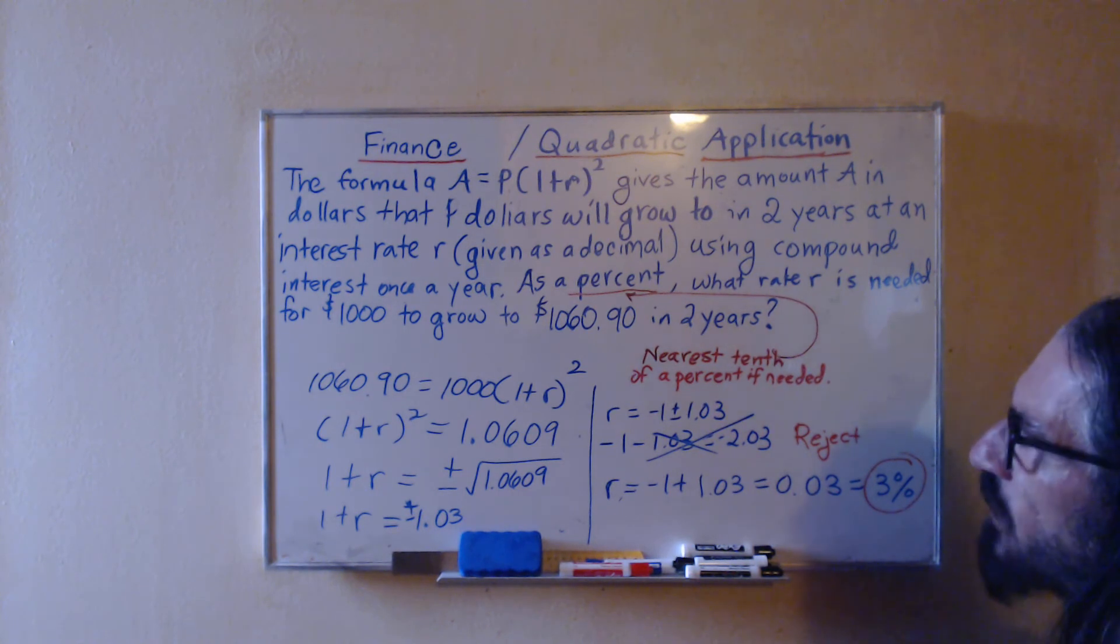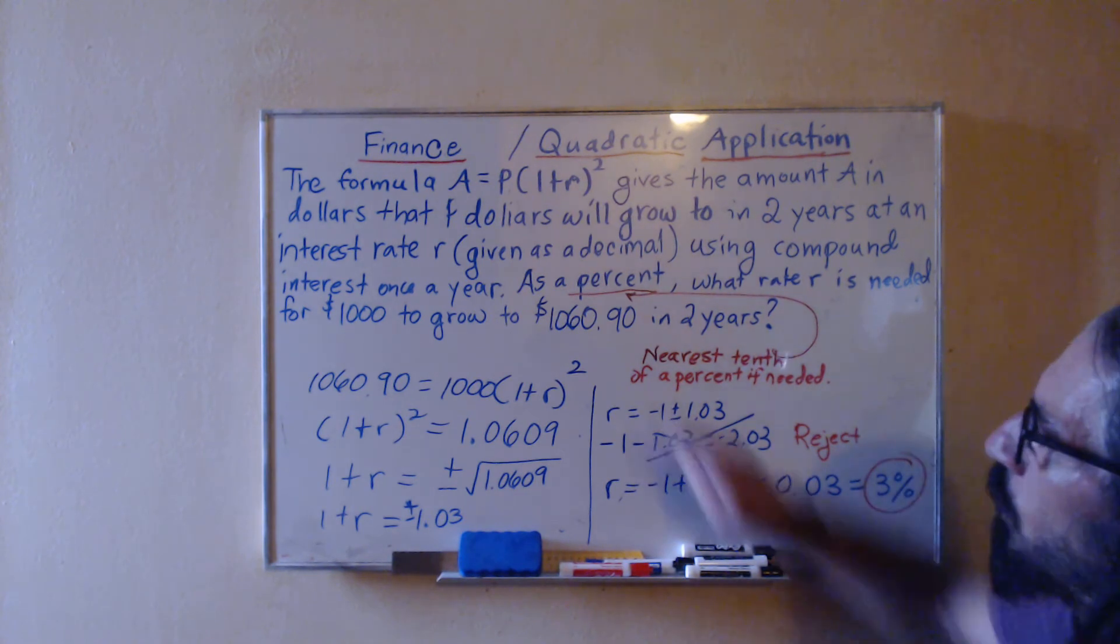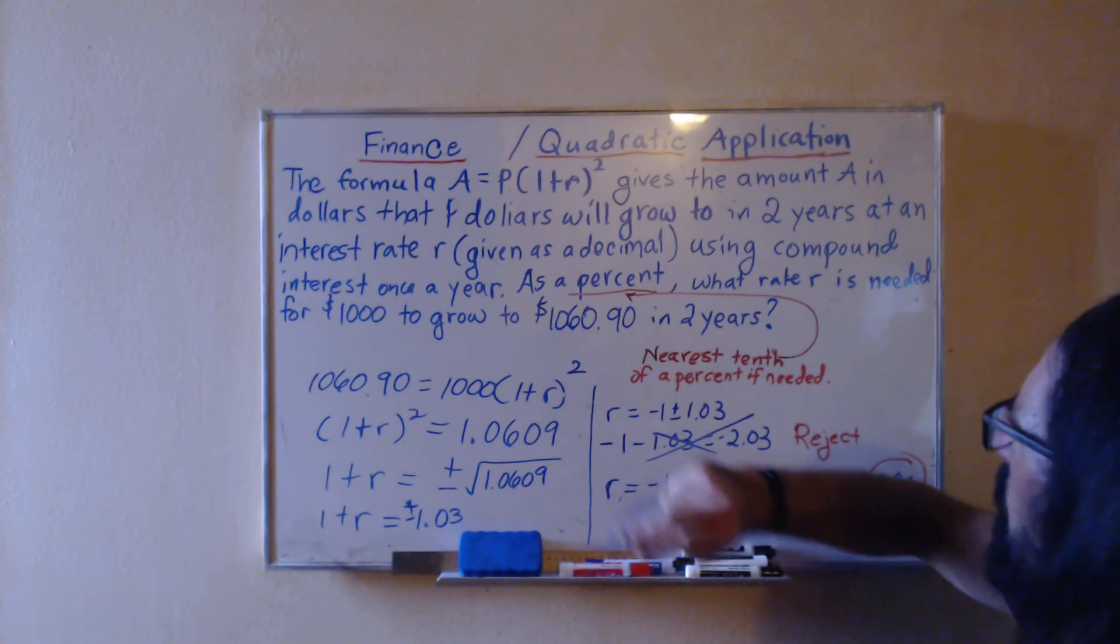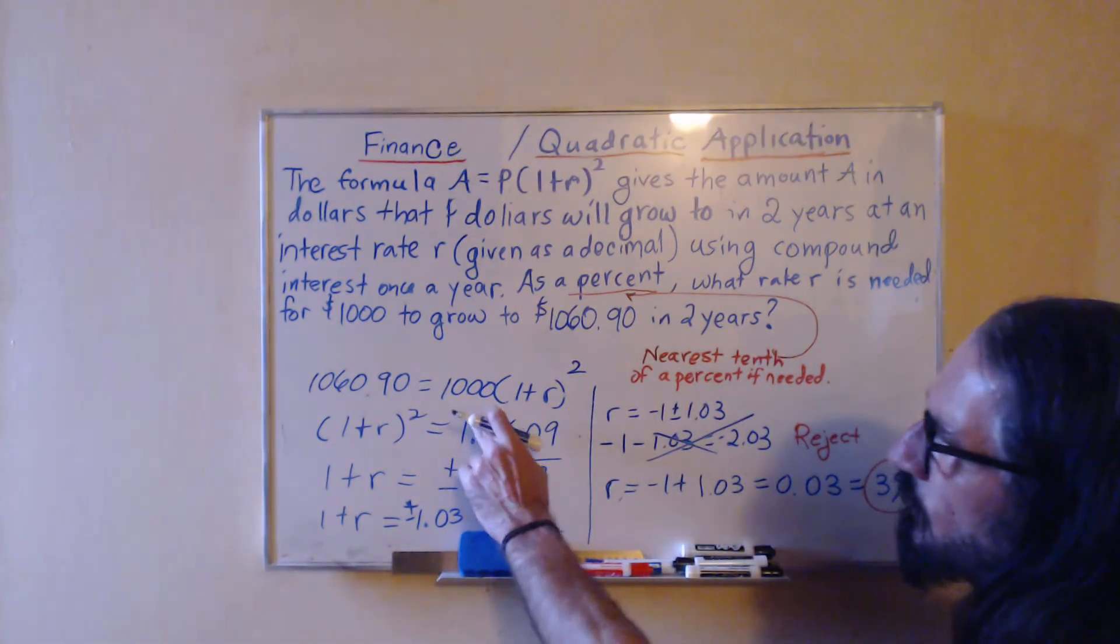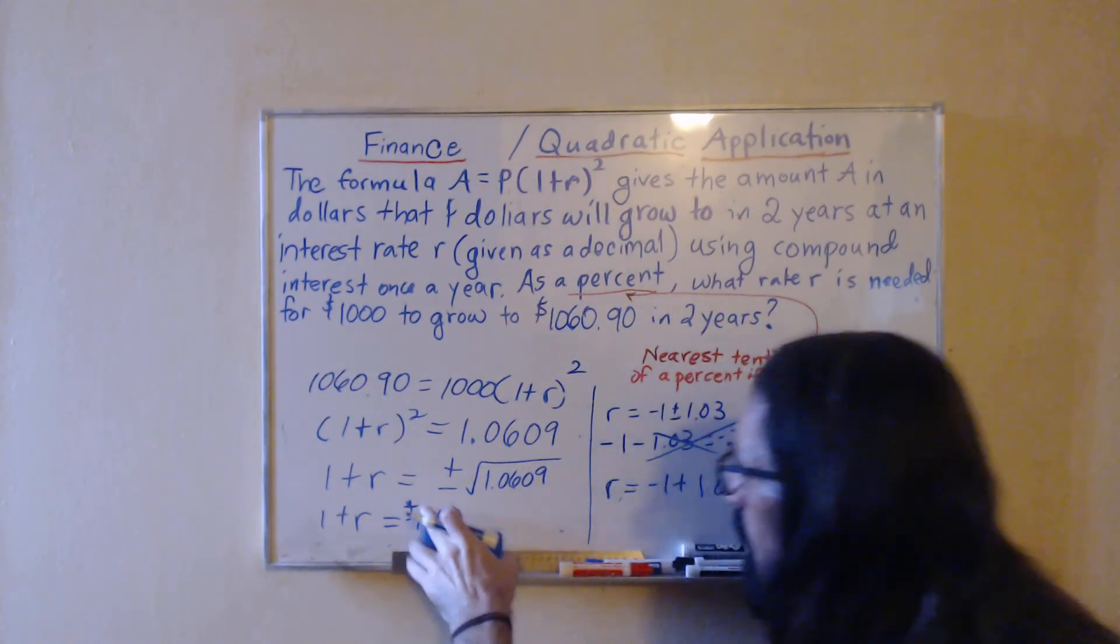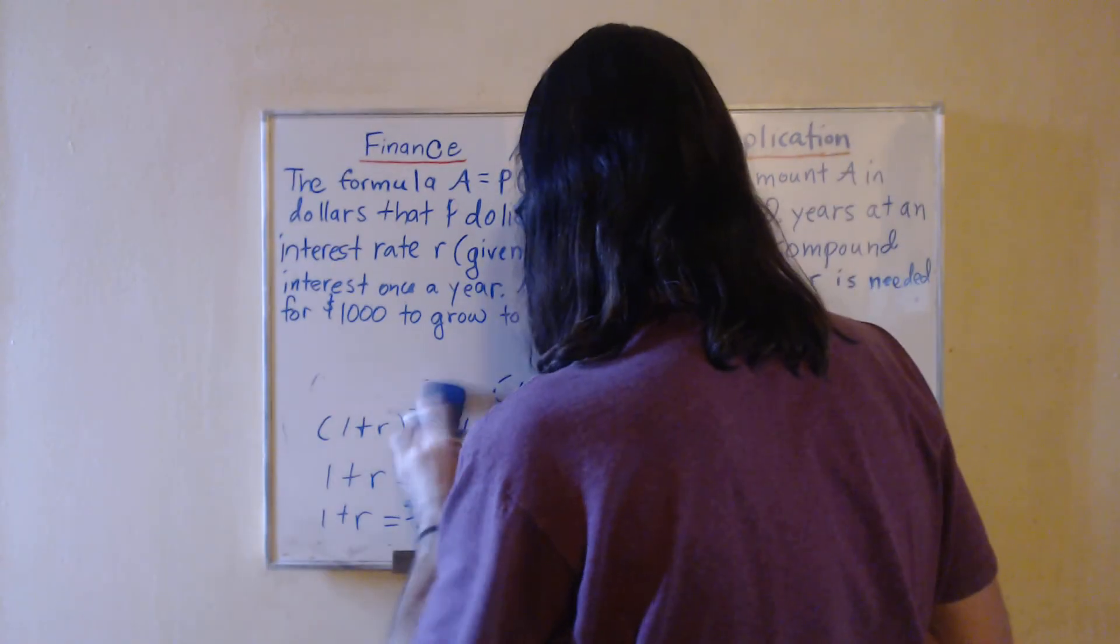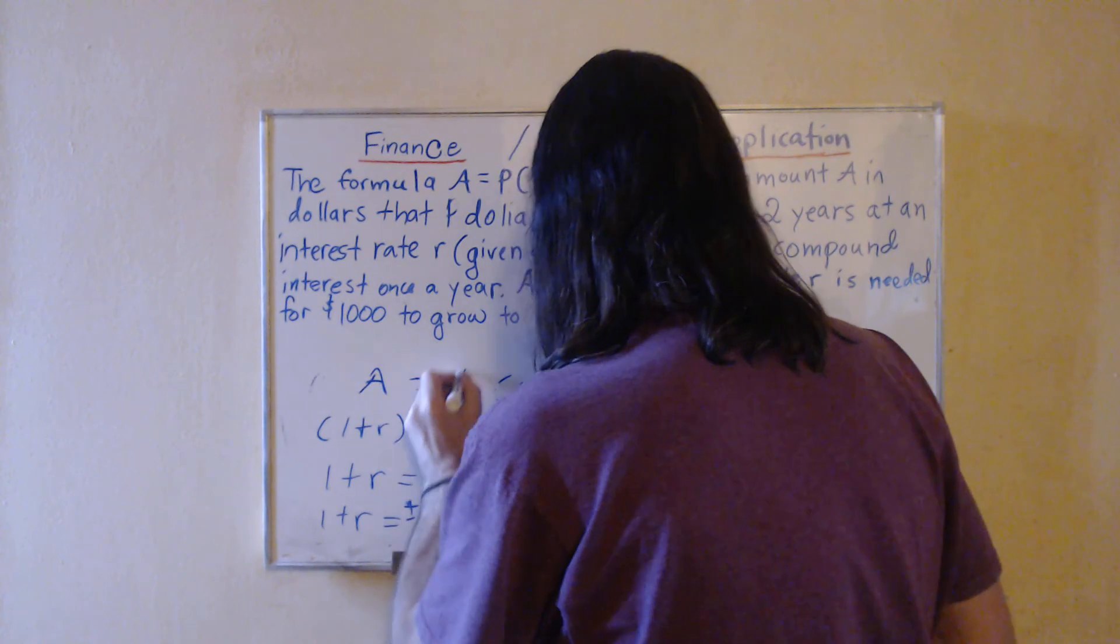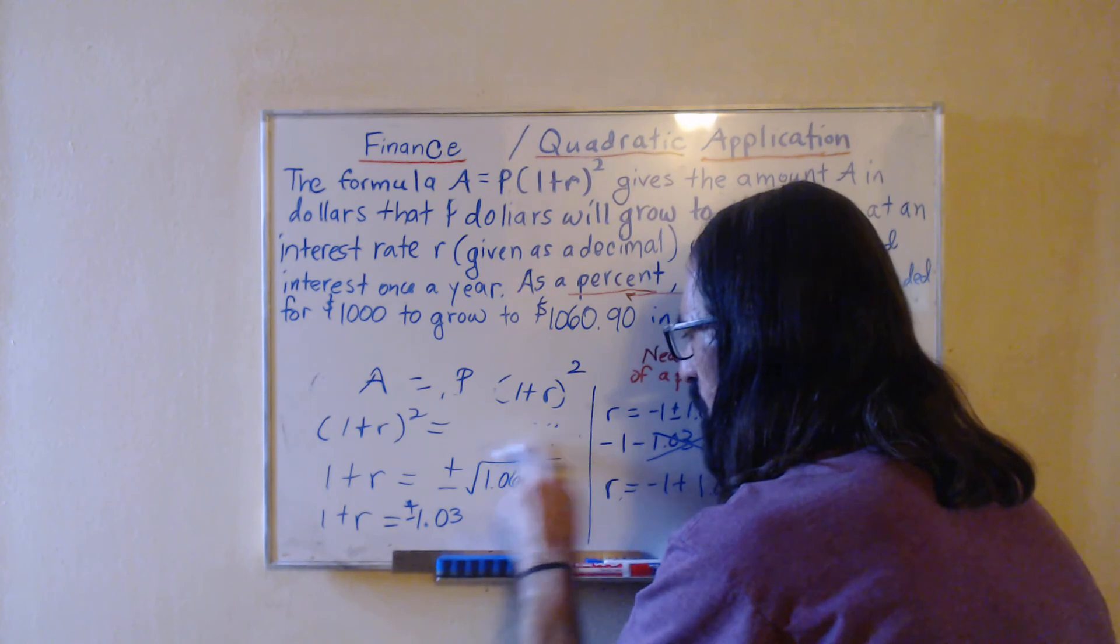Now suppose you had to do all sorts of calculations similar to this where it's supposed to occur in two years, they are applying compound interest once a year, and you have different values for P and for A. Then applying this step here, dividing both sides by 1000, would have been replaced with dividing by P, so you'd have A over P.